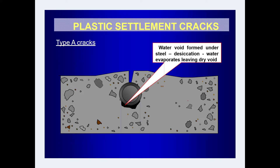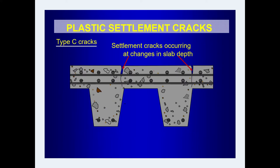Let us have a more precise view. Type A cracks appear in deep sections in a pattern of the reinforcement at the surfaces. The reinforcement is visible here, and excess water accumulated due to bleeding gets evaporated, leaving a dry void after desiccation. For type C cracks, plastic settlement cracks appear where there is a change of slab depth — the depth is larger on one side and smaller on the other.